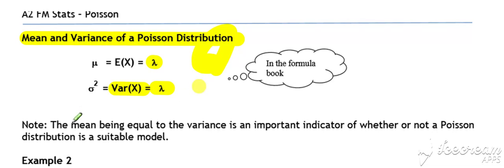This fact that the mean and the variance are equal to each other is a good indicator of whether or not a Poisson distribution is a suitable model for a given set of data. A mean and variance that are similar to a set of data is a good indication that maybe a Poisson distribution could be present as a model.